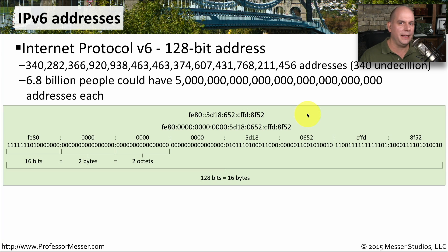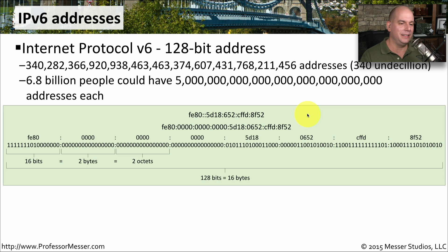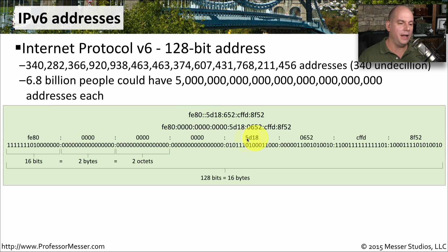It seems like a very complicated address, so let's break it down and give you an understanding of exactly how an IPv6 address is structured. Although it looks a little different, it is exactly the same as working with an IPv4 address — just a much longer address expressed in hexadecimal. The double colons signify that there are zeros in that spot. The uncompressed version of that address is FE80 followed by a bunch of zeros, with the other numbers appearing near the end. We'll talk about IPv6 compression in just a moment.